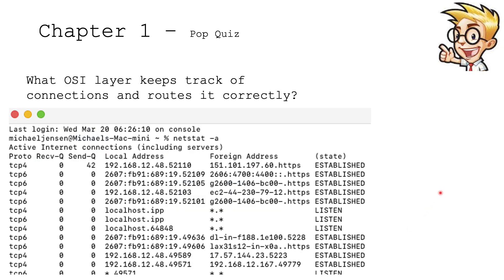Last question. What OSI layer keeps track of connections and routes it correctly? We have a little picture here of Netstat. Do you remember Netstat? Which layer is that? Can you take a guess? It is actually the session layer. So all the different sessions and who is listening, who is active, who is acknowledging, you can see them at the session layer.